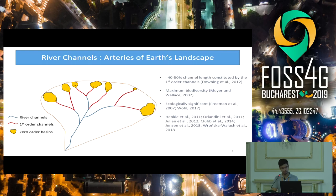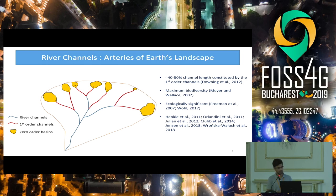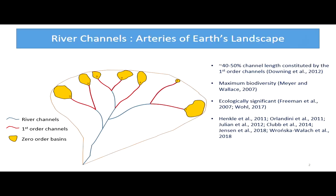Now, why is this significant? Several previous studies have shown that ecological diversity is inversely proportional to stream order. These lower-order streams are still pristine, while the higher-order streams may be polluted due to discharge from industries or other reasons. But these lower-order streams are still pristine, and we can preserve them.